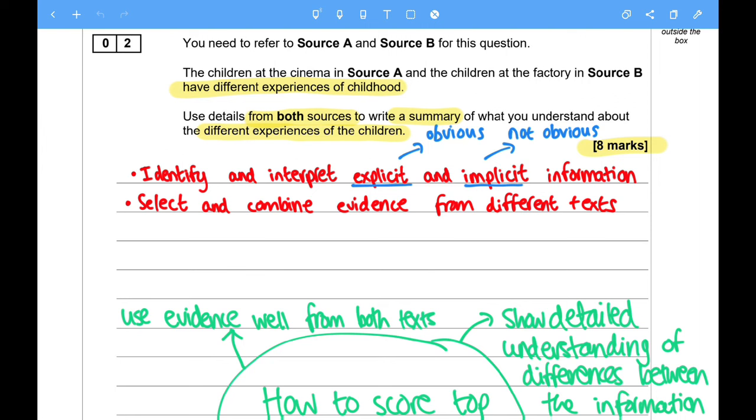Use details from both sources to write a summary of what you understand about the different experiences of the children. So as you can see, I've highlighted some key words or key phrases within the question. So we can establish already that both sources have different experiences of childhood.